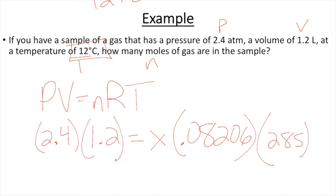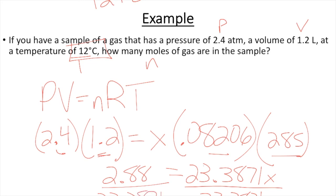So I'm going to multiply these two. And I get 23.3871. And it's still multiplied by the X. So I'm going to still put the X there. And then, 2.4 times 1.2 gives me 2.88. Now to get X by itself, I need to divide by the 23.3871 on both sides of my equation. It cancels over here and gives me that my X is equal to 0.123 moles.